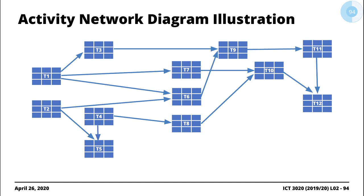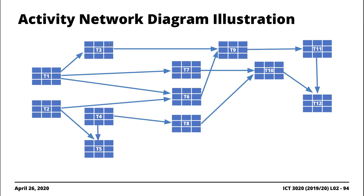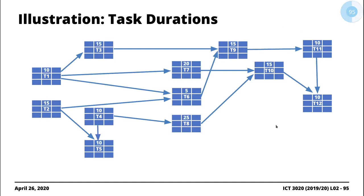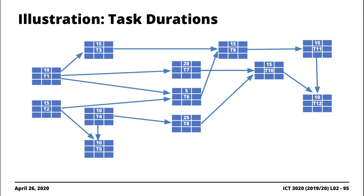After completing the dependency tree, we indicate the durations associated with all the different activities. Once the durations are added, we go through the forward pass. For the forward pass, we start with the initial tasks — tasks that don't depend on anything at all. We go through the tasks in sequence: T1, T2, T3, T4, all the way up to T12.